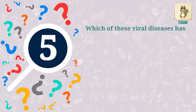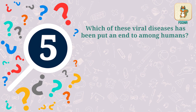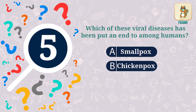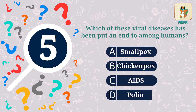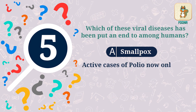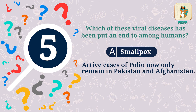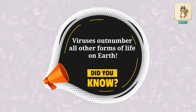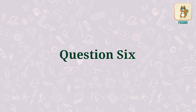Question 5. Which of these viral diseases has been put an end to among humans — smallpox, chickenpox, AIDS, or polio? The answer is smallpox. Active cases of polio now only remain in Pakistan and Afghanistan. Did you know? Viruses outnumber all other forms of life on earth.